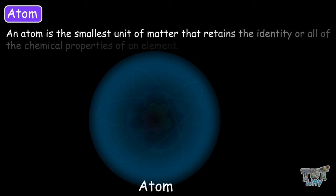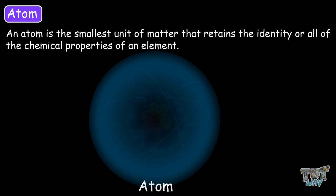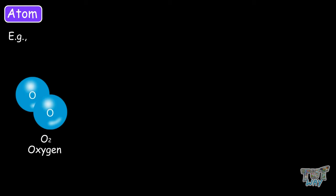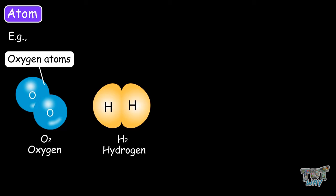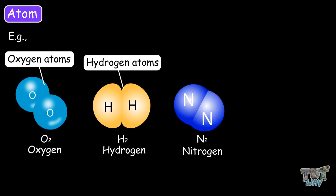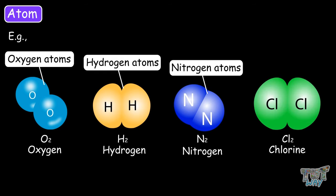The atom is the smallest unit of matter that retains the identity or all of the chemical properties of an element. For example, oxygen contains oxygen atoms, hydrogen contains hydrogen atoms, nitrogen contains nitrogen atoms, and chlorine contains chlorine atoms.